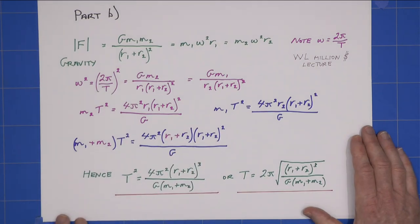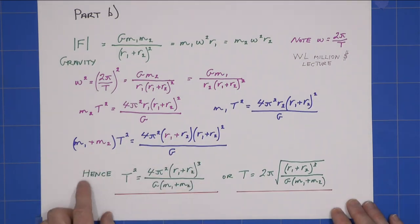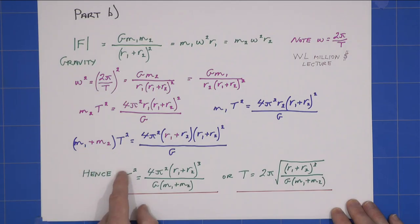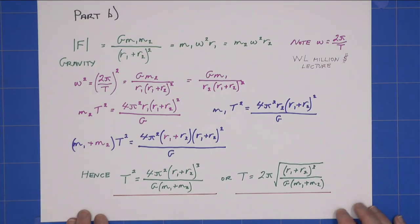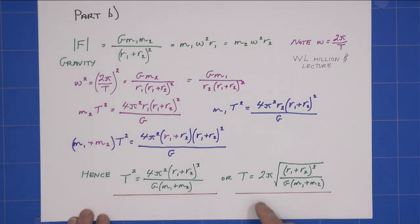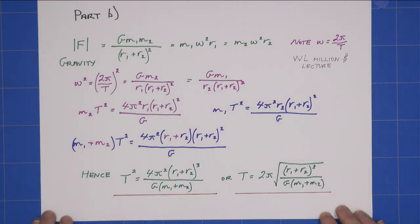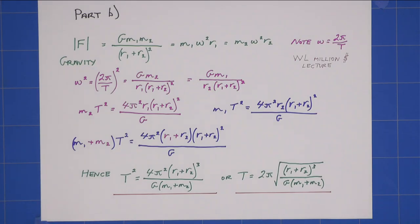I can rearrange by dividing by m1 plus m2, and I get that. Or, slightly simplifying, I simply take the square root and I get T = 2π√[(r1+r2)³/G(m1+m2)]. That is my answer for Part B—the period of the binary star. Thank you!